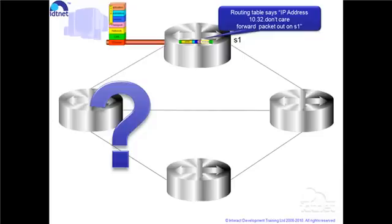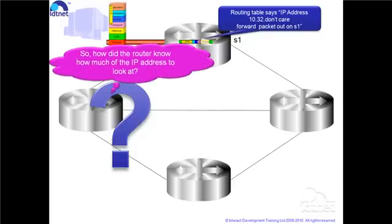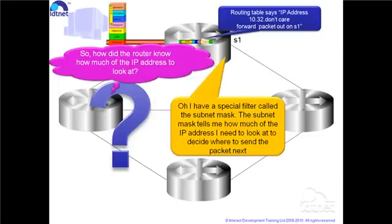So, how did the router know how much of the address to look at? Well, as we've said, routers and PCs know how much of the IP address to look at by means of a thing called a subnet mask. The subnet mask is a sort of a filter that specifies the number of bits of an IP address that are needed to make the routing decision for a particular hop.